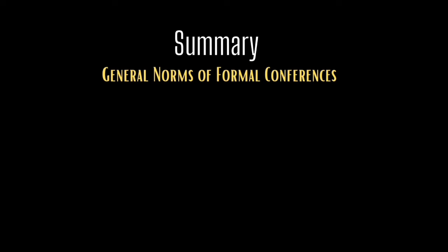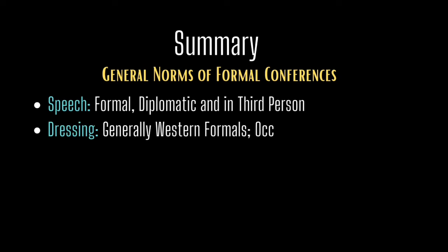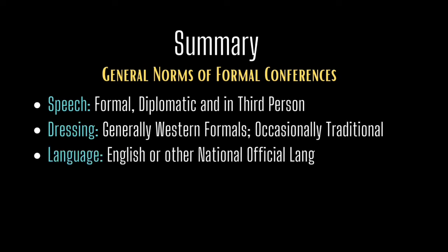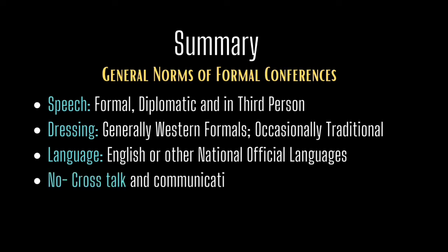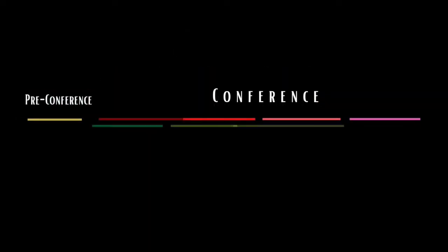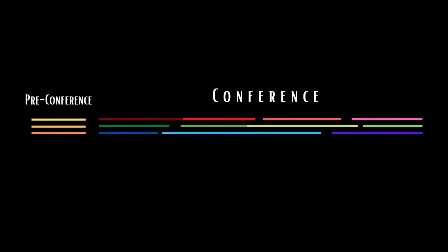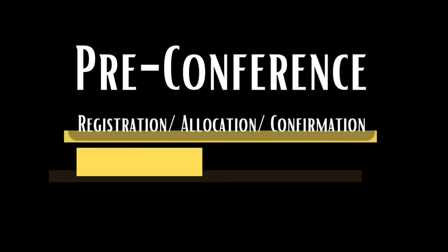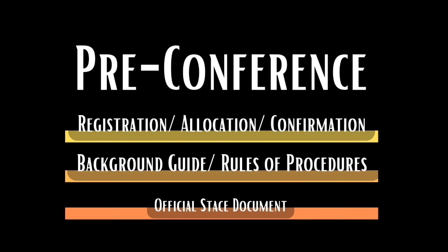Now let us summarize our learning this week. In the first video, we explored a few general norms of formal conferences commonly seen in MUNs: speaking formally, diplomatically, and in third person; dressing in western formals or occasionally traditional formals; speaking primarily in English or other official languages during formal sessions; preventing cross-talk during formal sessions; and respecting the role of committee dais members as debate moderators. Following this, we covered two phases of Model UN conferences by exploring three types of Model UN procedures widely accepted internationally. The first phase is the pre-conference phase with the processes of registration, allocation, and confirmation, which for committee dais applicants extends to an additional interview stage. Following this, participants receive a background guide covering the agenda and a rules of procedures manual. A few conferences also ask delegates to submit position papers before the conference begins.